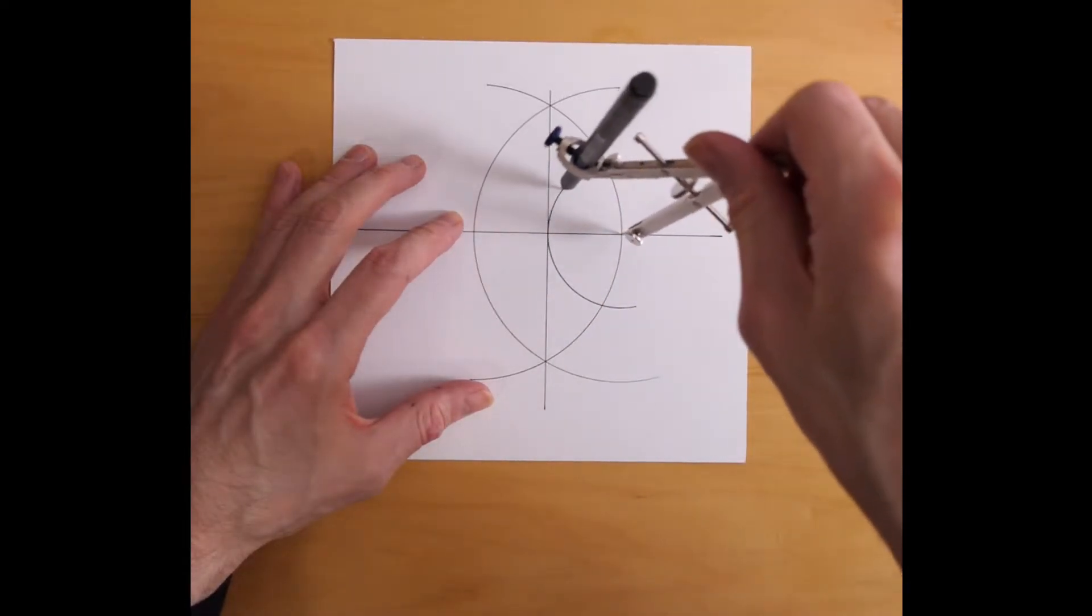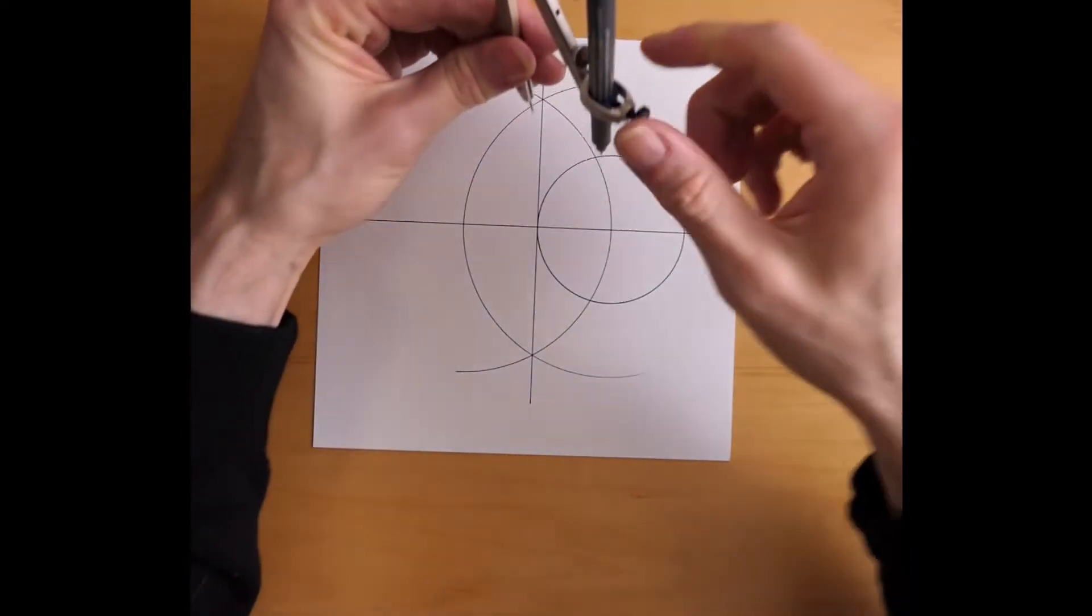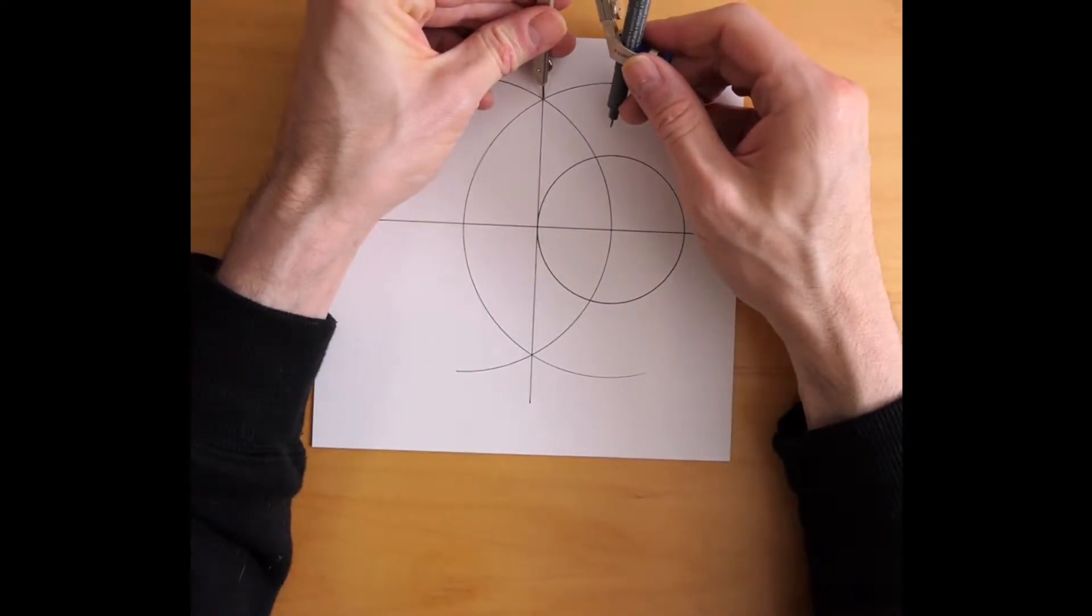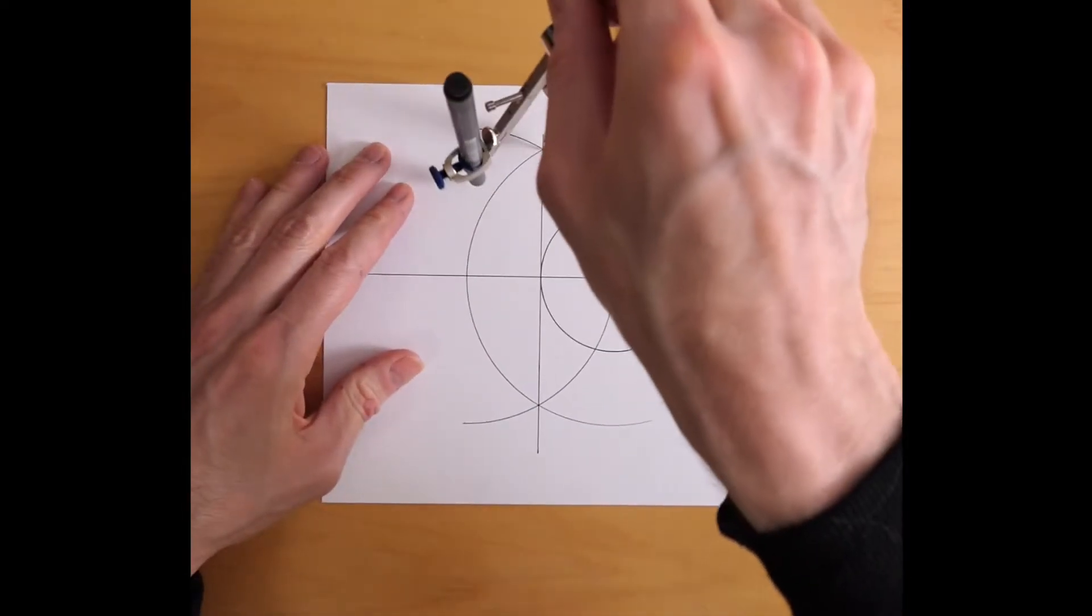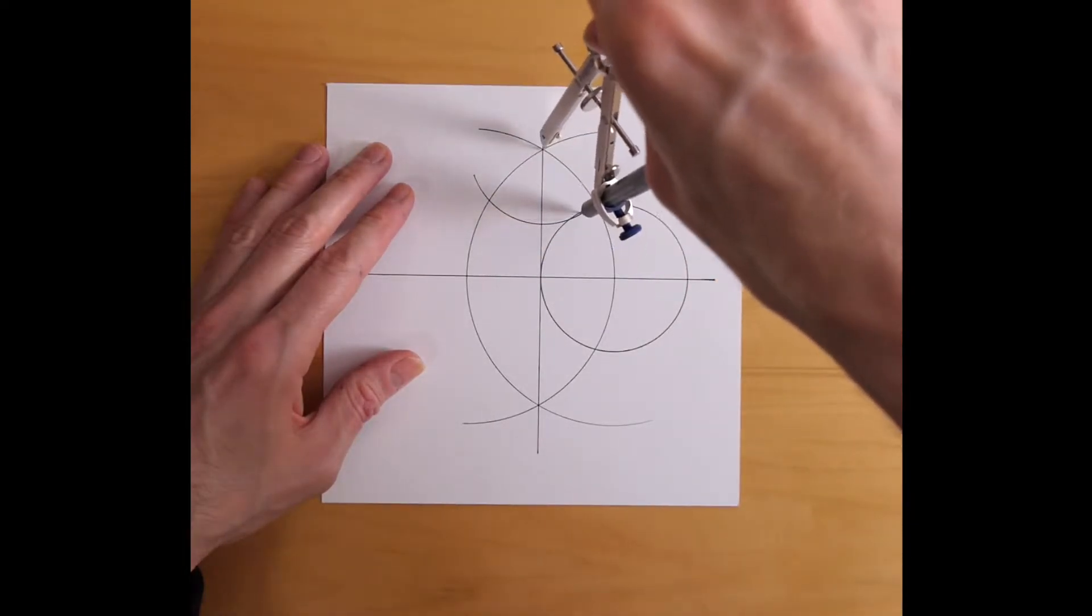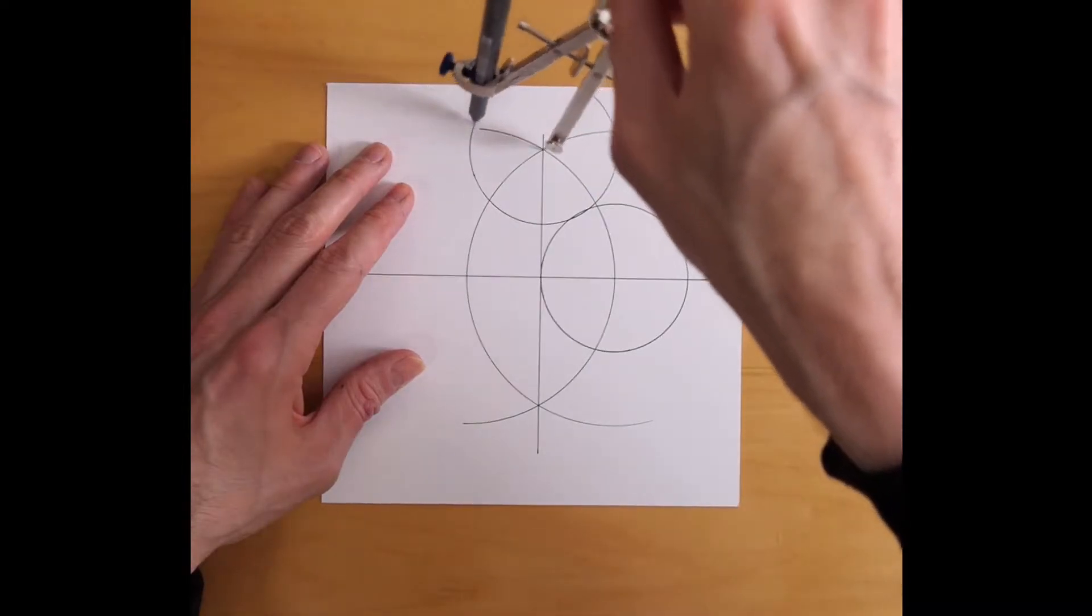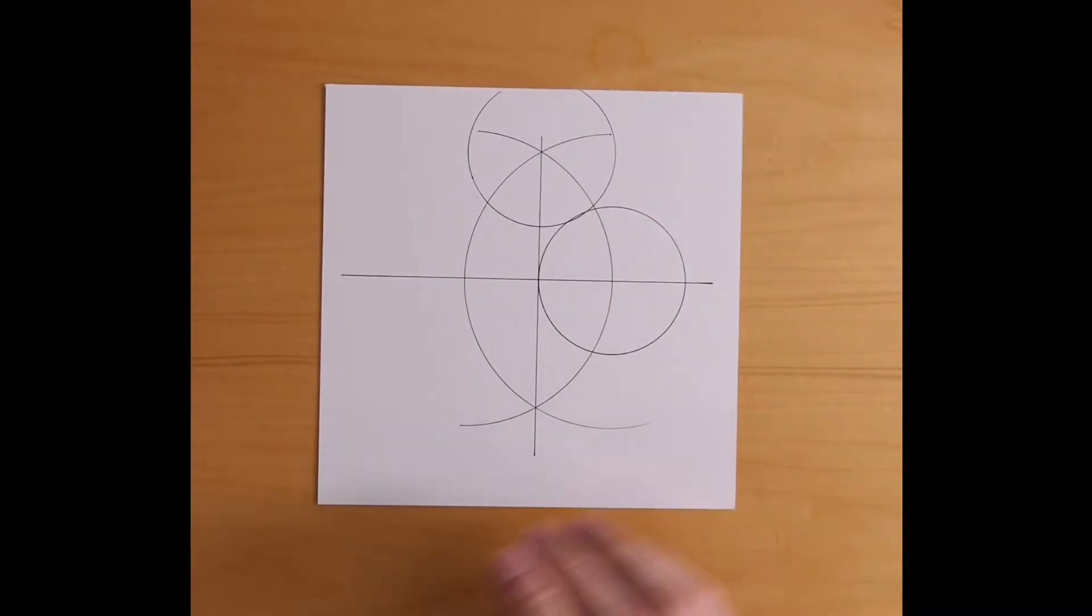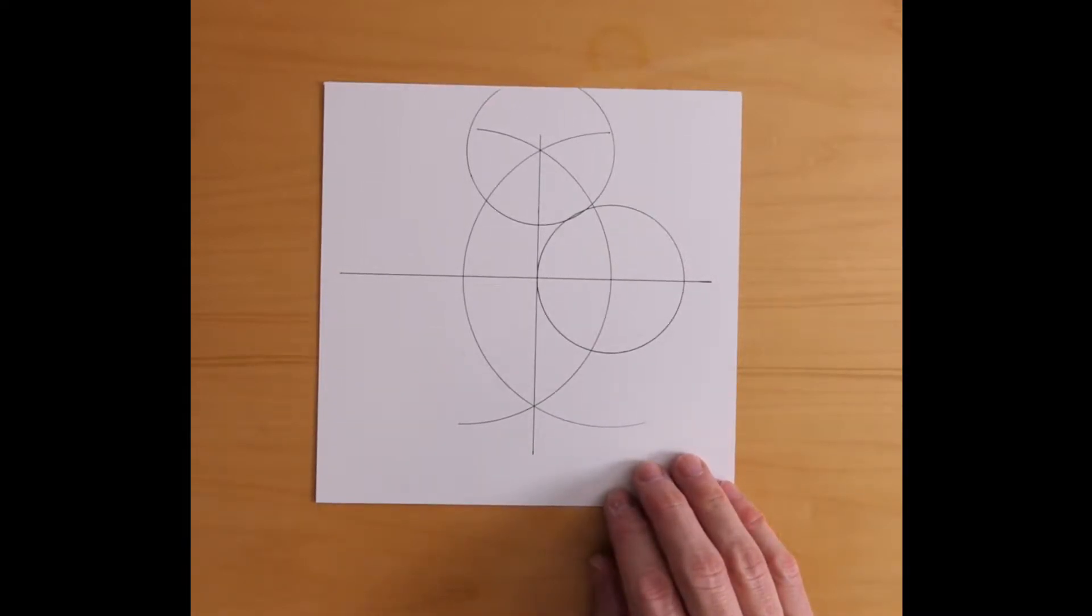And then I'm going to move the compass point up to this new intersection up here and draw another circle. And you'll see that it should just touch the first circle. Well, it's pretty close anyway. Okay. And now I actually have most of what I need to construct a pentagon.